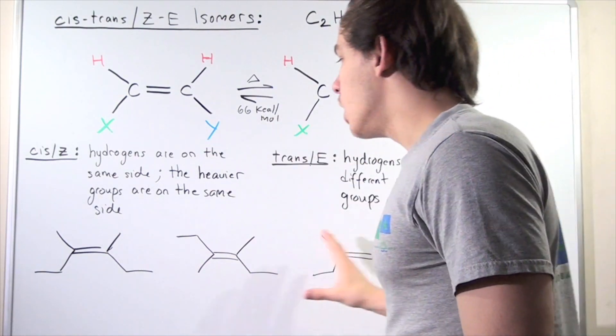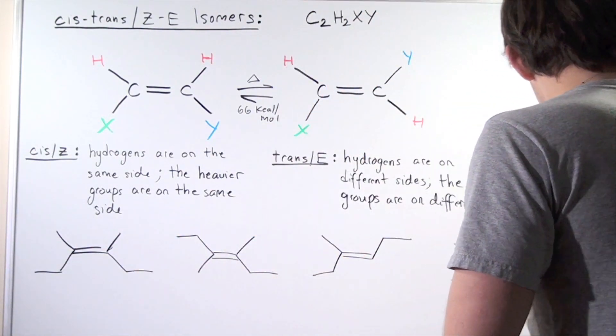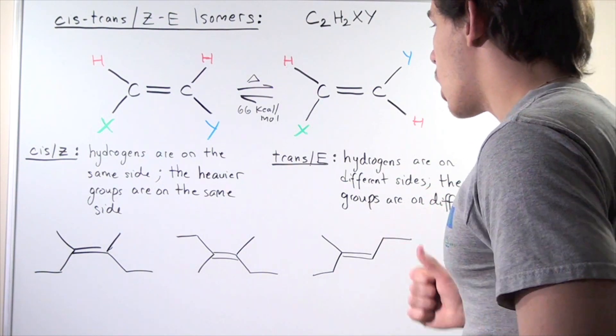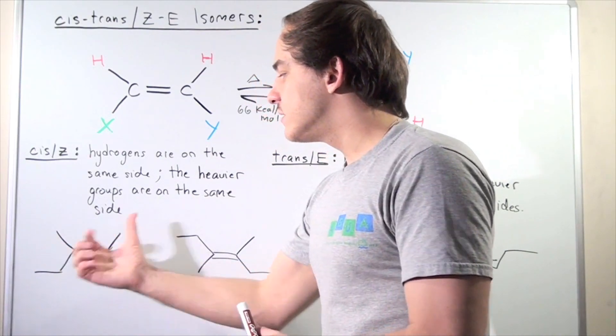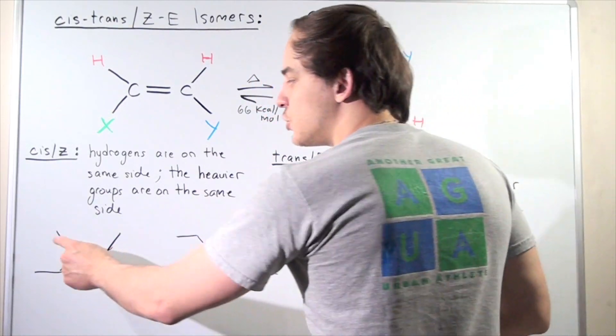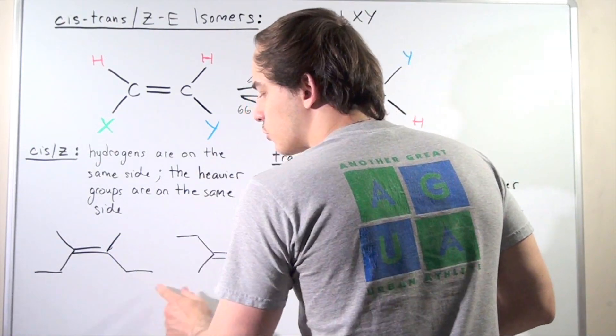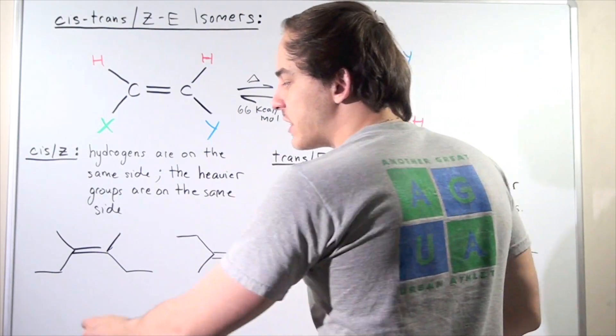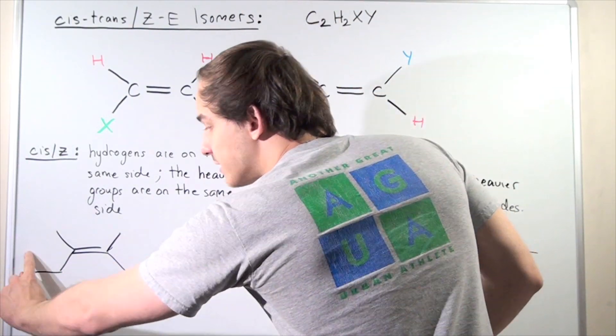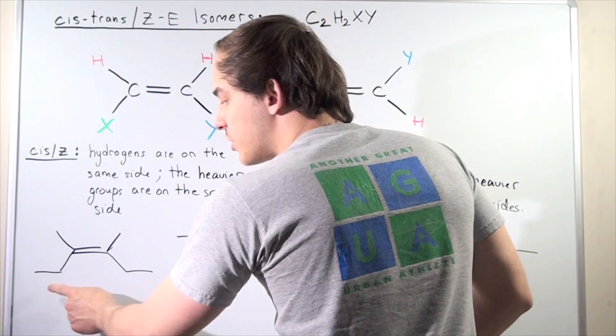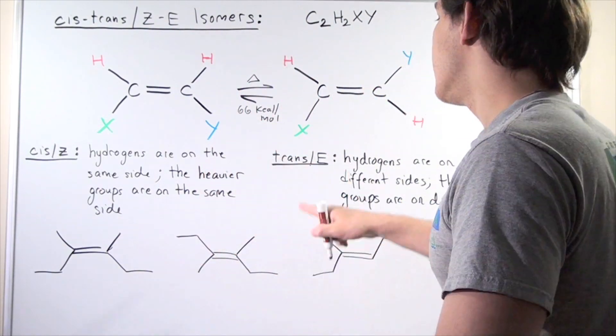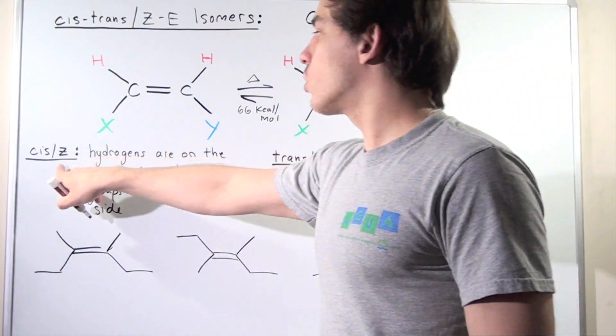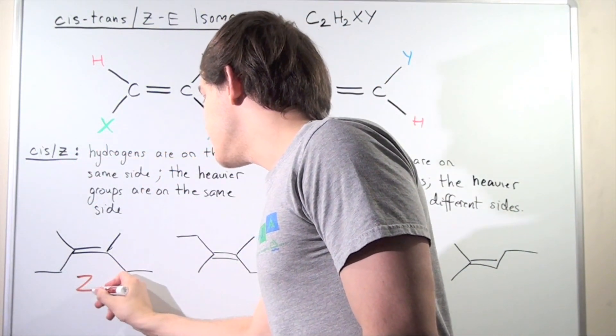So, let's look at the following few examples, and let's try to figure out which ones are E and which ones are Z. So we're looking for the heavier groups and the lighter groups. So we have two methyl groups and two ethyl groups. Ethyl is heavier, that means these guys found on the same side are the heavier groups. And so we have the heavier groups on the same side, so that means we have our Z. So this must be Z.